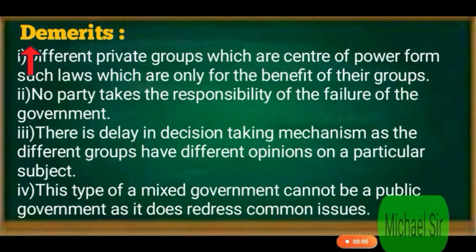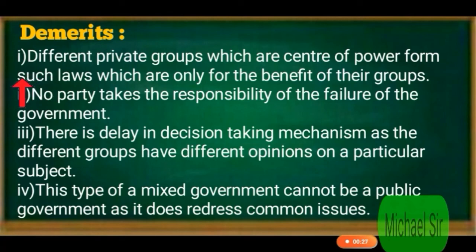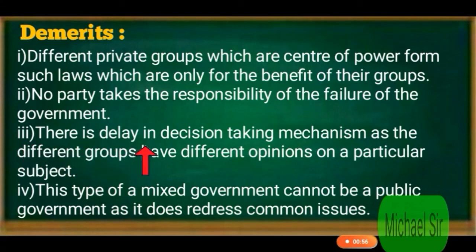Now let us study the demerits. First, different private groups which are centers of power form such laws which are only for the benefit of their own groups. Second, no party takes the responsibility for the failure of the government. Third, there is a delay in the decision-making mechanism as the different groups have different opinions on a particular subject.